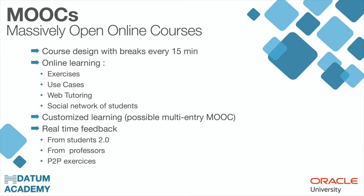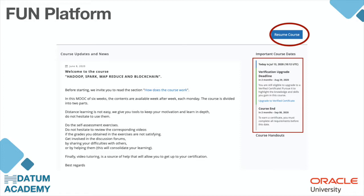You have the presentation — for example, here we have the course Adobe Spark, My Produce, and Blockchain presentation. You have the important course date on your right, and if you click on resume course you will find all the modules.